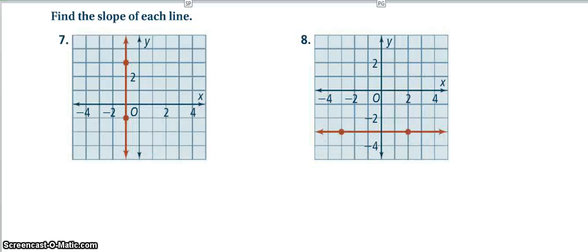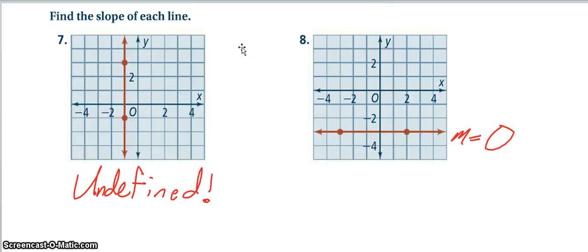Alright, in five seconds figure out what the slope of these two lines are. Five, four, three. And a vertical line is always, that's right, undefined. And a horizontal line is always zero for a horizontal.